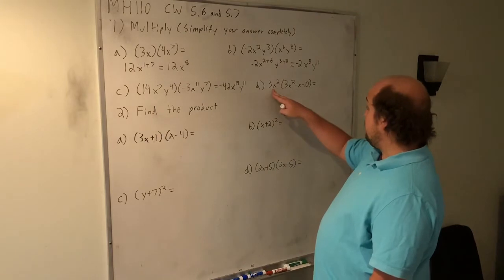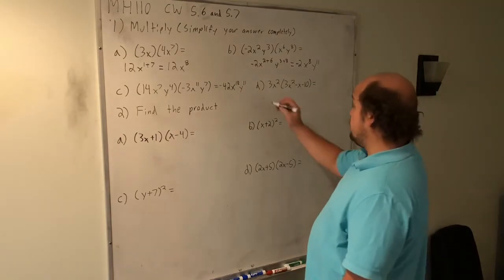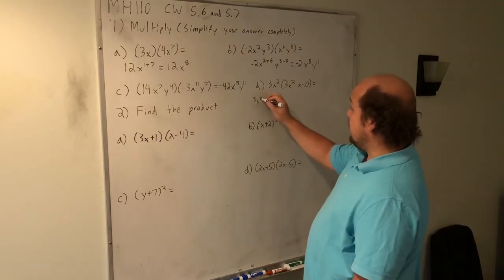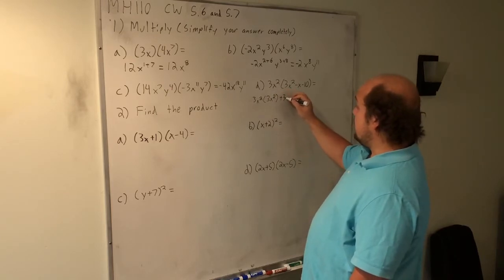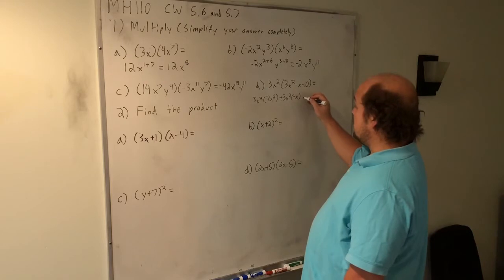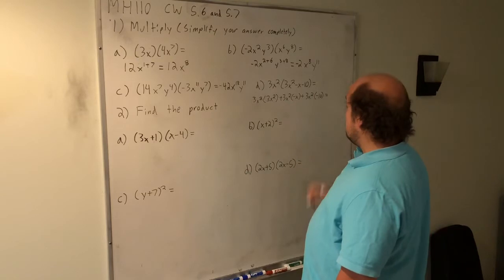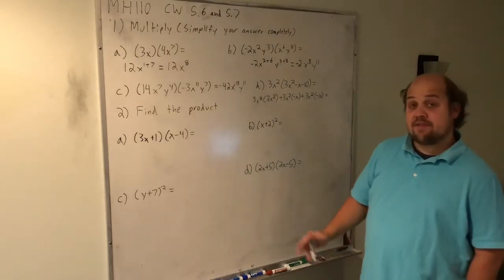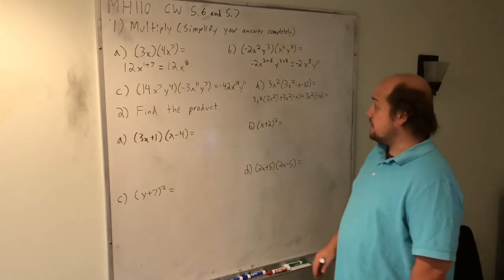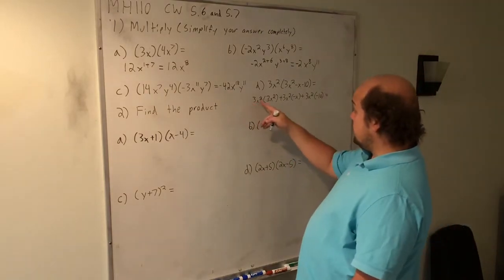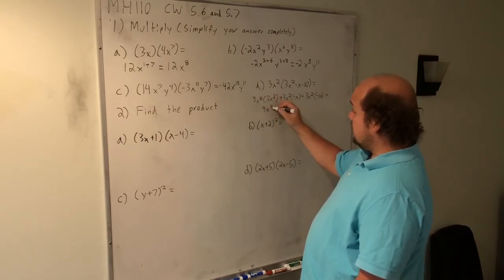When I have this 3x squared being distributed to each of these three terms, I need to see it as three separate multiplications. The first one is 3x squared times the first term, also 3x squared. Then I add to that 3x squared times the second term, negative x. Then I add to that 3x squared times the third term, negative 10. So this is just the distributive property — if I have something outside of parentheses, I need to multiply it by each term inside. My first multiplication: 3 times 3 gives me 9, and x to the 2 plus 2 ends up as x to the fourth.